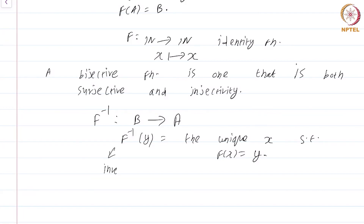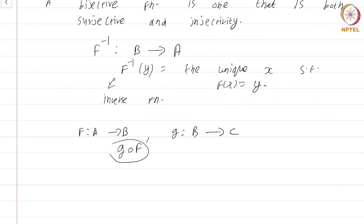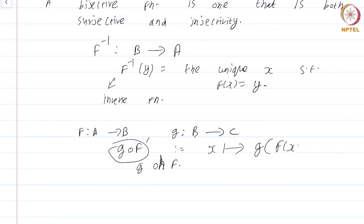This is called the inverse function. Given a function f from A to B and a function g from B to C, we can compose these functions, written g ∘ f, read as 'g of f' or 'g composed with f.' This is the function that takes x to g(f(x)) — you first apply f and then apply g.